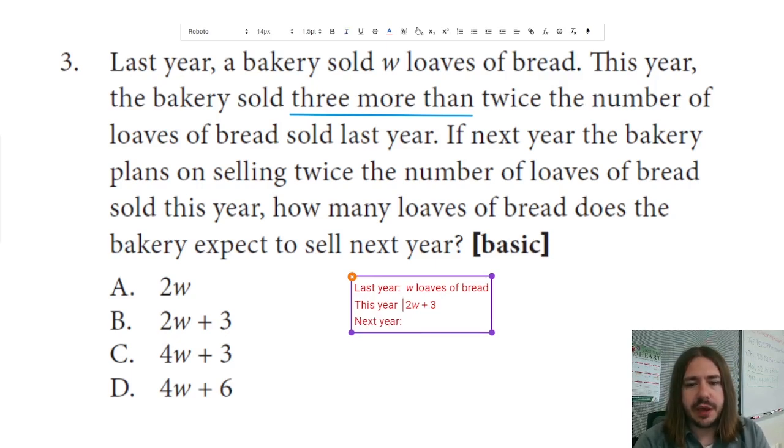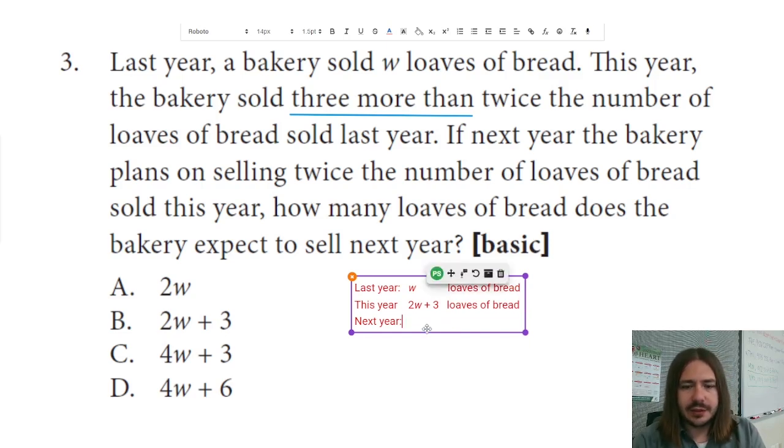And then finally, we're talking about next year. The next year, the bakery plans on selling twice the number of loaves of bread that it sold this year. We already know how many loaves of bread it sold this year, which is 2W plus 3. So next year it should be twice that. Okay, so twice that would be like two times this year, whatever we got for this year.